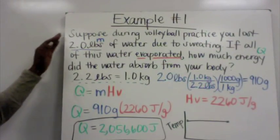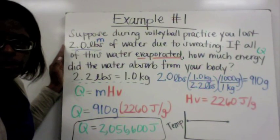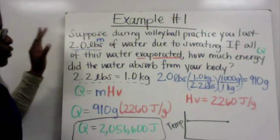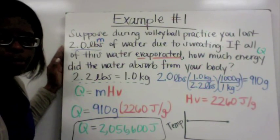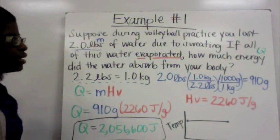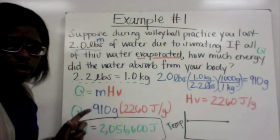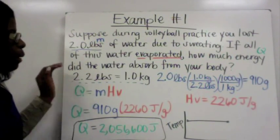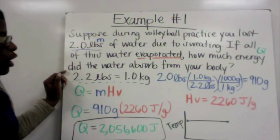Example 1: Suppose during volleyball practice you lost 2 pounds of water due to sweating. If all of this water evaporated, how much energy did the water absorb from your body? Annotate the problem: mass is 2 pounds (marked in blue). The water evaporated, so we use heat of vaporization (marked in orange). How much energy — that's Q — is marked in green.